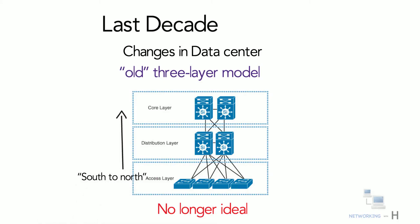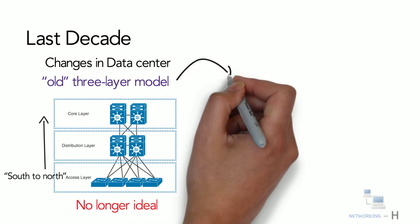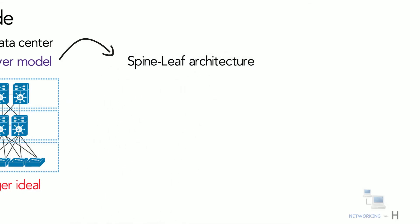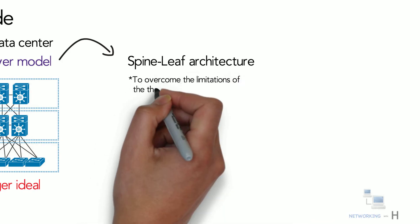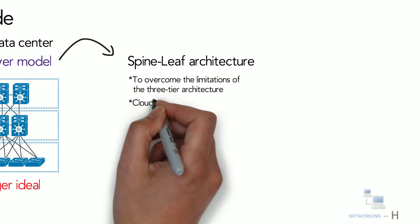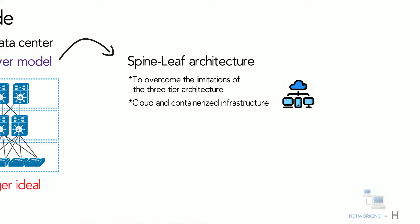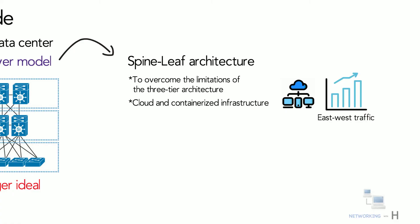Currently a new architecture is replacing the traditional three-tiered network architecture, which is also known as spine-leaf architecture. The spine-leaf architecture was developed to overcome the limitations of three-tier architecture. Given the prevalence of cloud and containerized infrastructure in modern data centers where east-west traffic continues to increase, the spine-leaf model is the ideal choice for building the modern data center network.